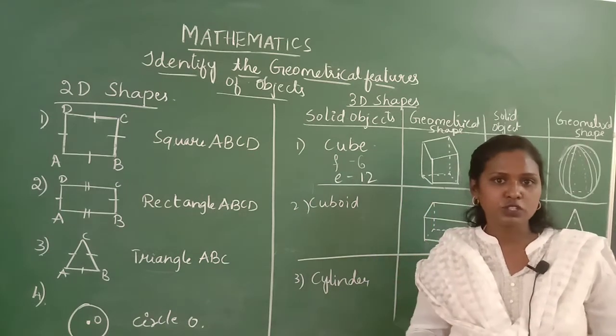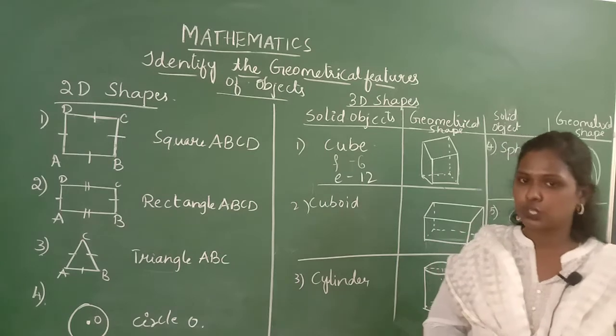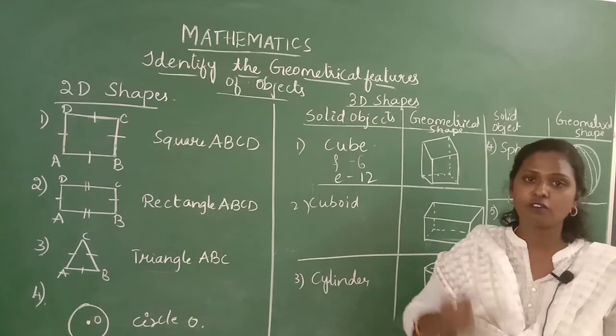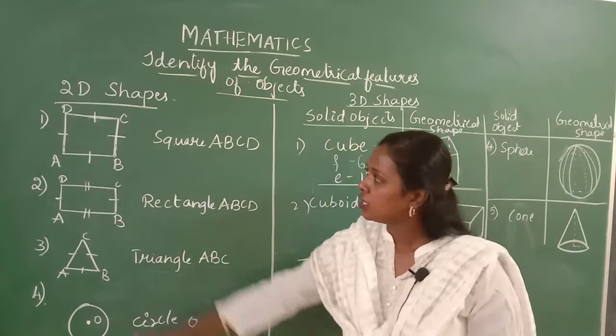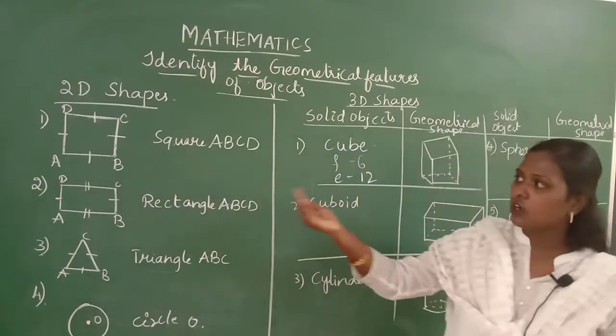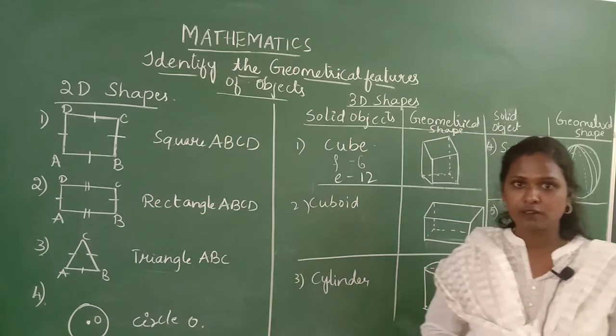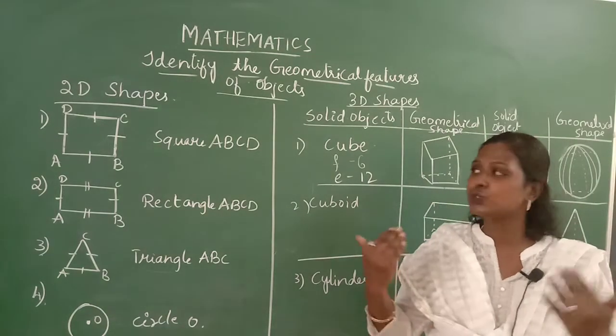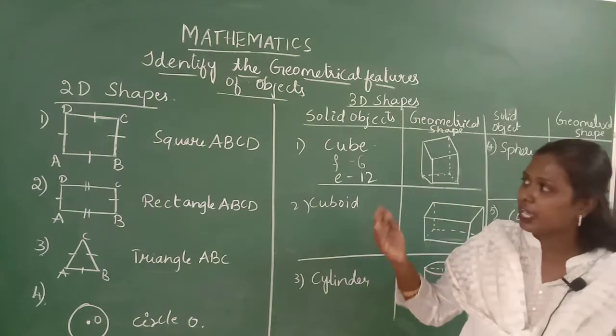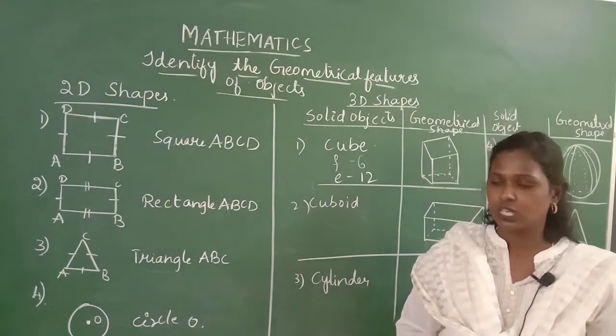2D shapes are also called two dimensional shapes. Two dimensional shapes consist of measurements of length and breadth. Here are some of the examples given to you where you can learn 2D shapes even more easier. 2D shapes you can draw on a plane or a flat surface.